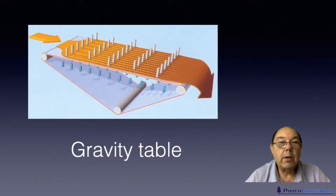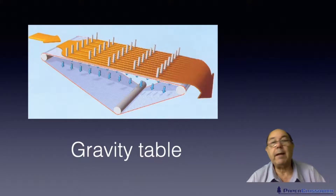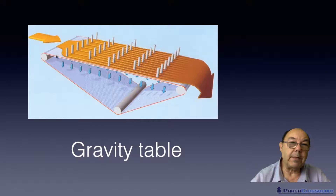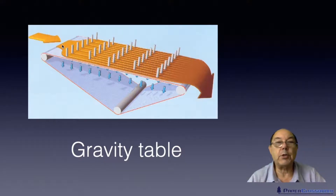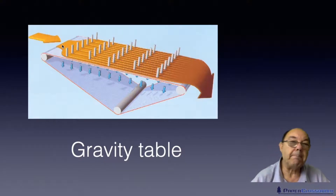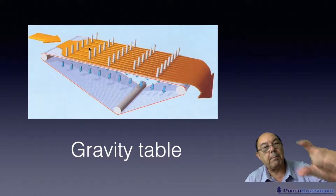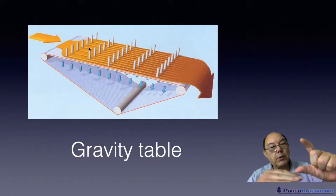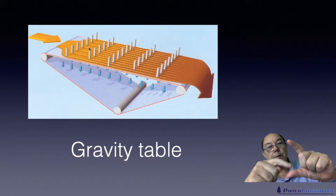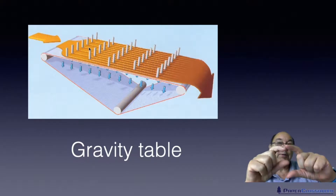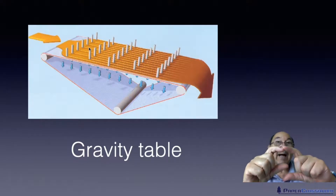Another device was the gravity table, again very much like a fourdrinier. We have this horizontal wire mesh travelling along, and we deposit our suspension on it. They realised that if you've got a fairly thick mat, the water from the top part of the mat can't get through to the wire below.